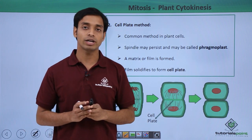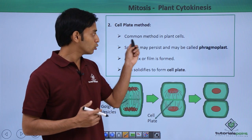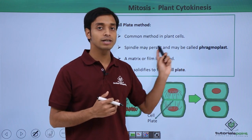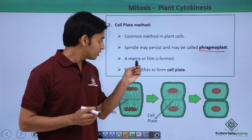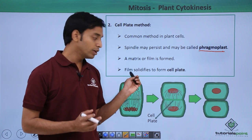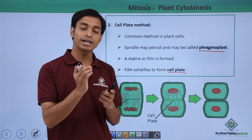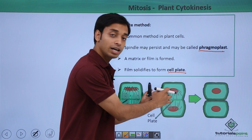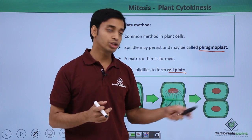The second and more common type of plant cytokinesis is known as the cell plate method. Here the spindles may persist and are called the phragmoplast. A matrix or film is formed at the middle position of the cell, which slightly solidifies to result in the formation of the cell plate. This cell plate, formed at the middle portion of the plant cell, slowly grows in size and ultimately touches the existing cell wall, then the cell pinches off into two new daughter cells.